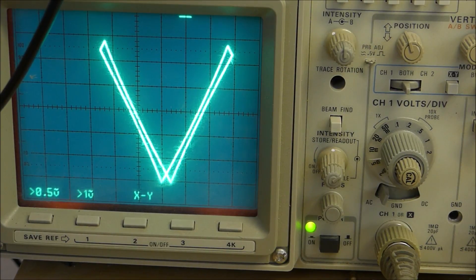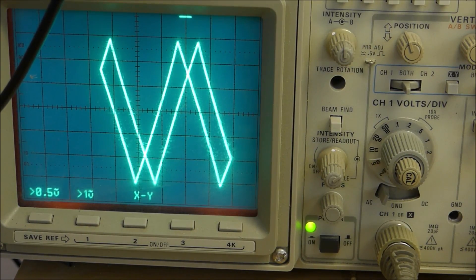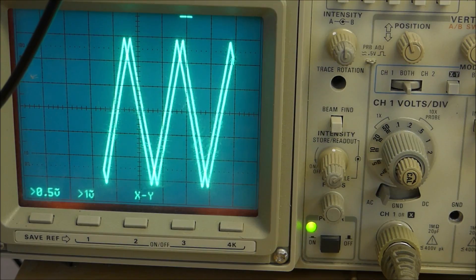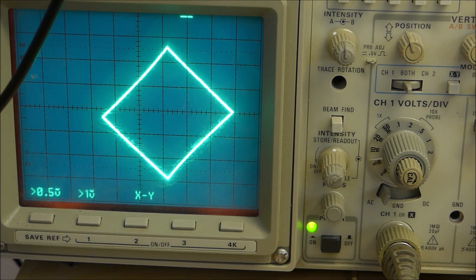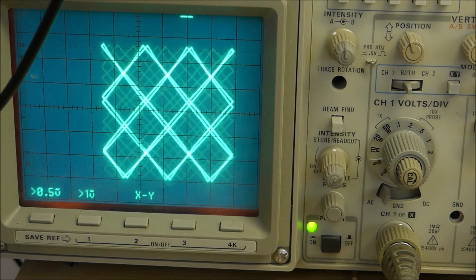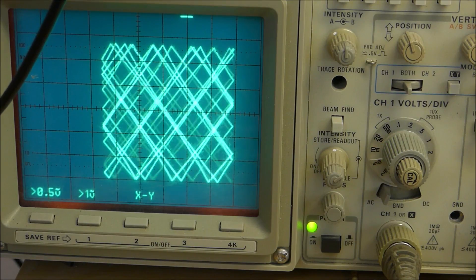At a one to two ratio it's whatever that is, a V. One to three, one to four, one to five, one to six. So it looks like that. If we get into the smaller changes we can get really cool looking checkerboard patterns like this.